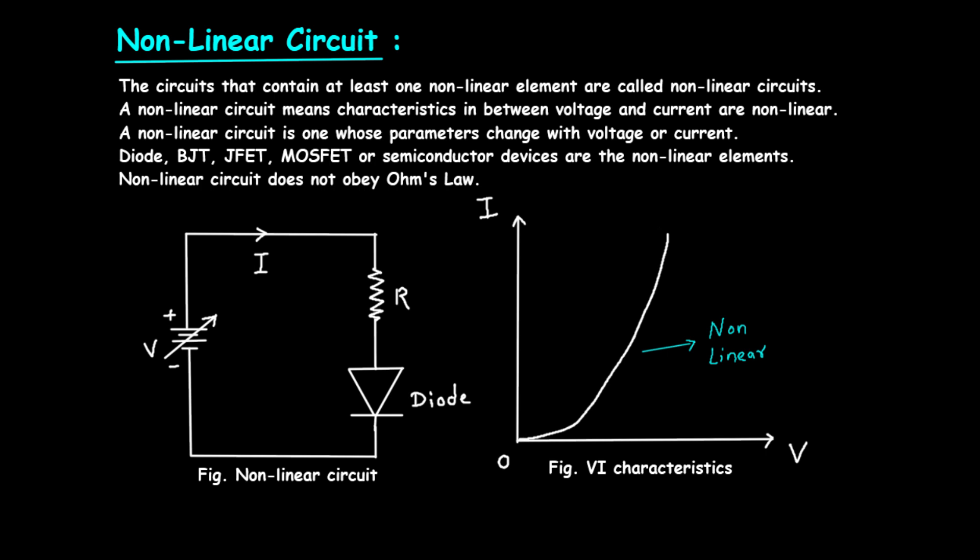This is a typical non-linear circuit. The voltage source provides the driving voltage. The resistor is used to limit the current in the circuit. The diode is the non-linear element.